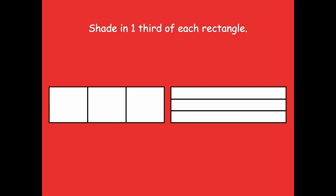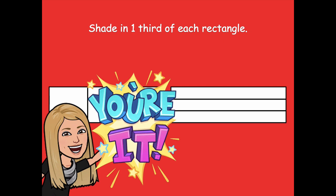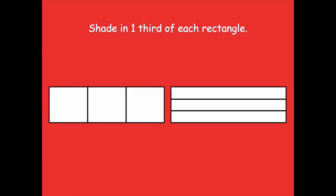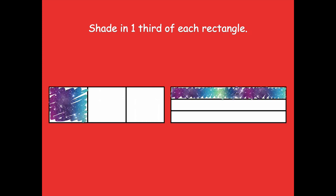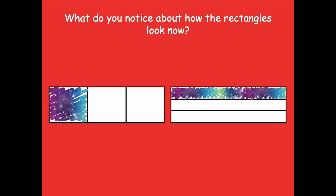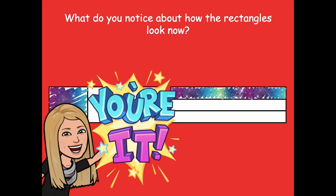Now I want you to shade one third of each rectangle. Pause the video, shade one third of each rectangle, and then click play when you're ready for the next step. Here's one third and one third. What do you notice about how the rectangles look now? Pause the video, think about how they look, and then click play when you're ready to go over it together.